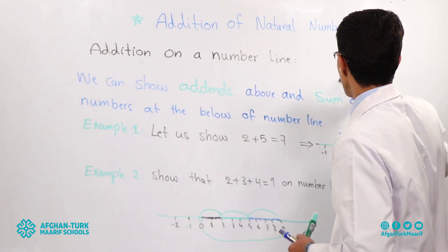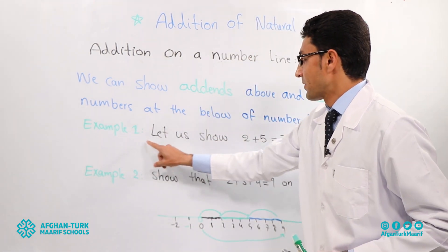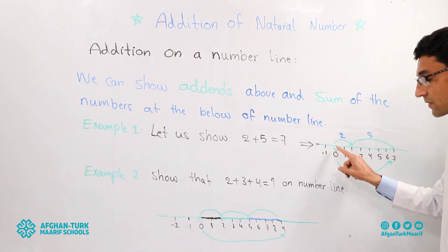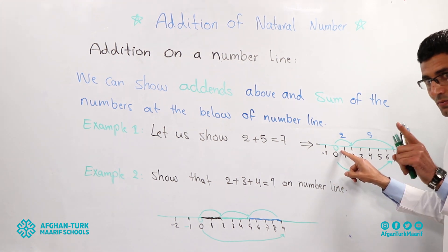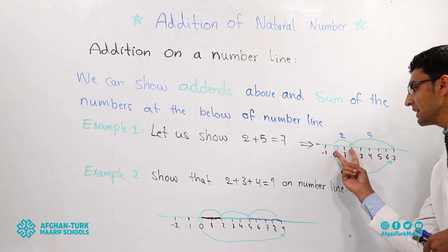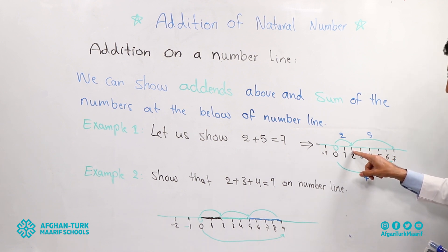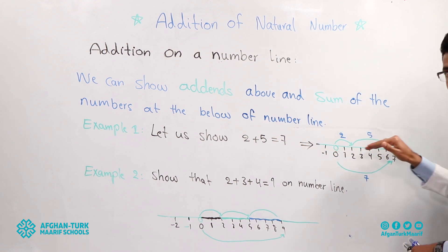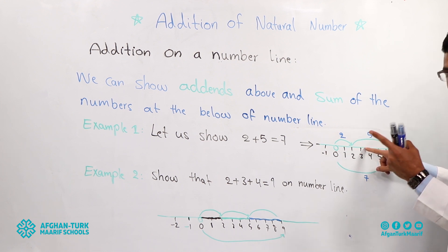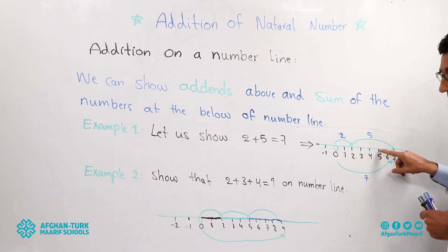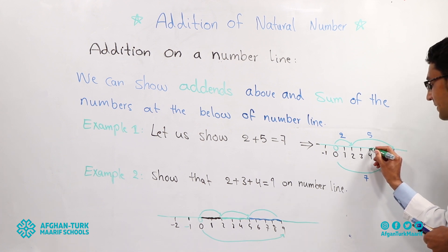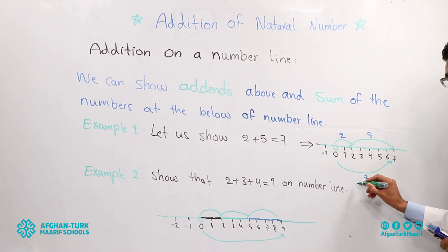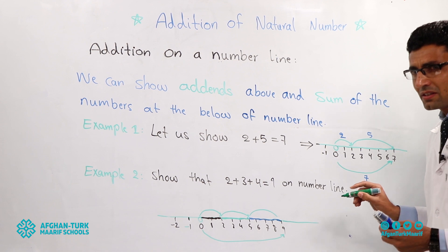Example one: let us show two plus five equals seven on the number line. We start from zero. From zero to two is two numbers. Then from two, we move five numbers forward: two to three, three to four, four to five, five to six, six to seven — that's five numbers. Two numbers plus five numbers gives a total of seven numbers. Did you understand? Yes.